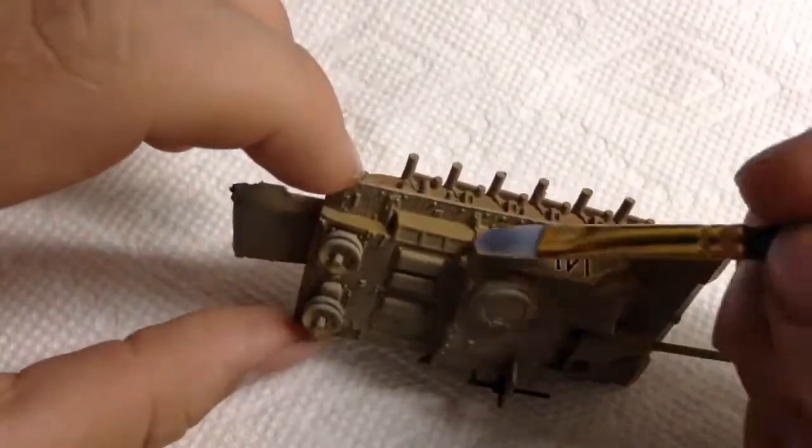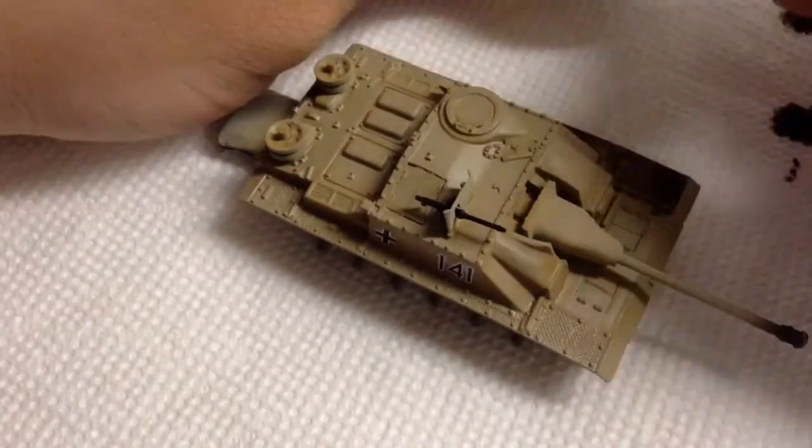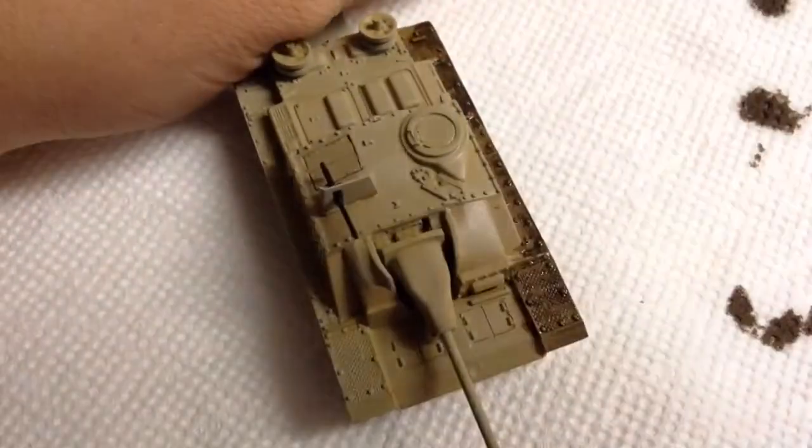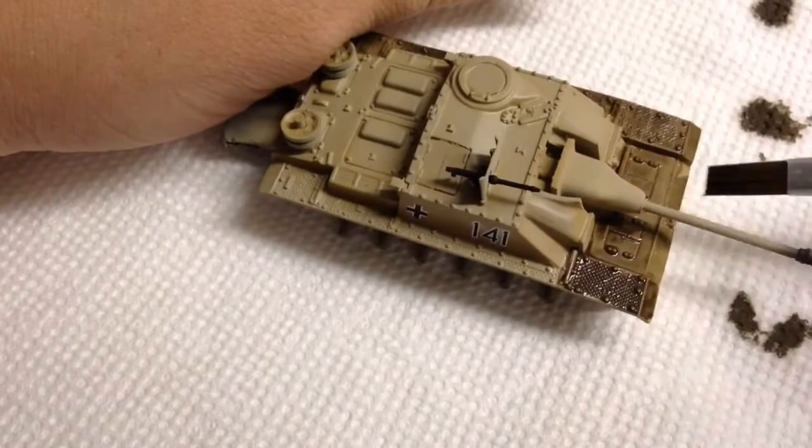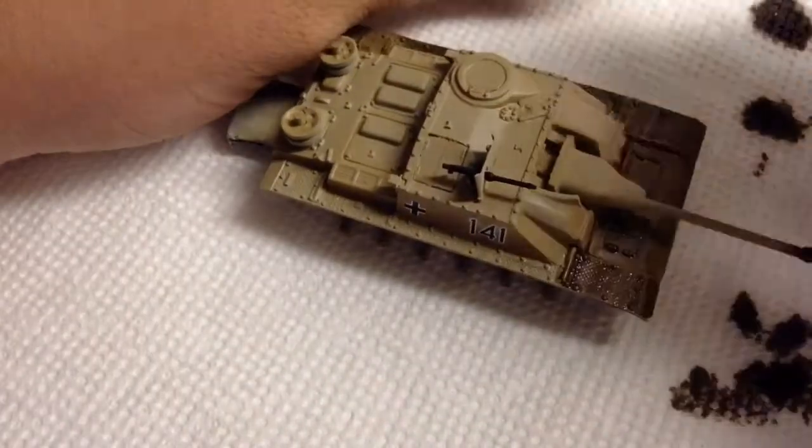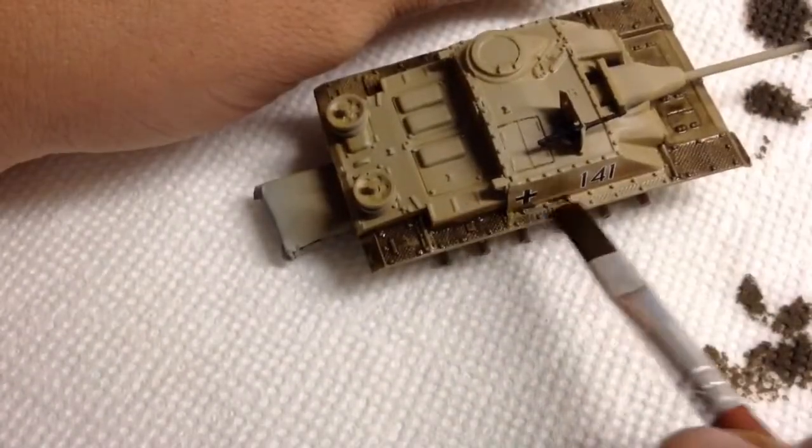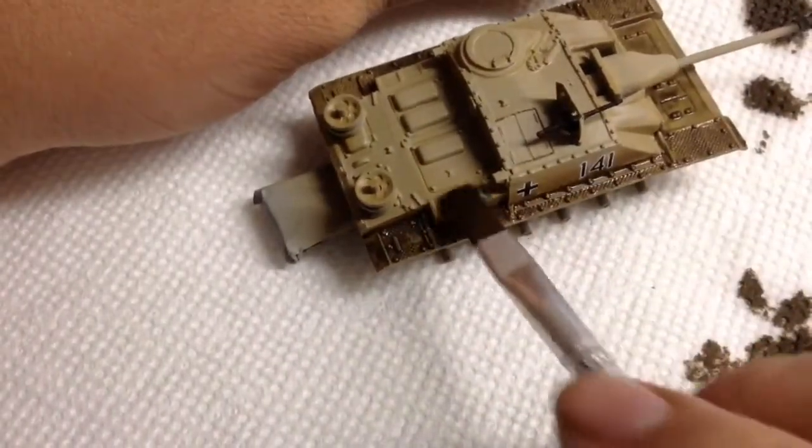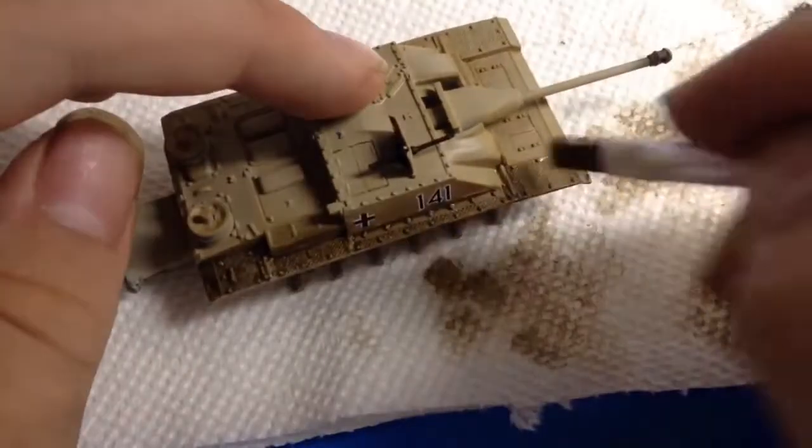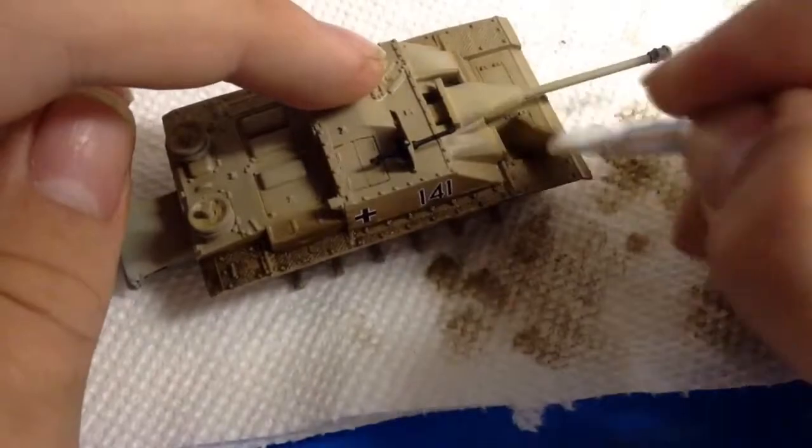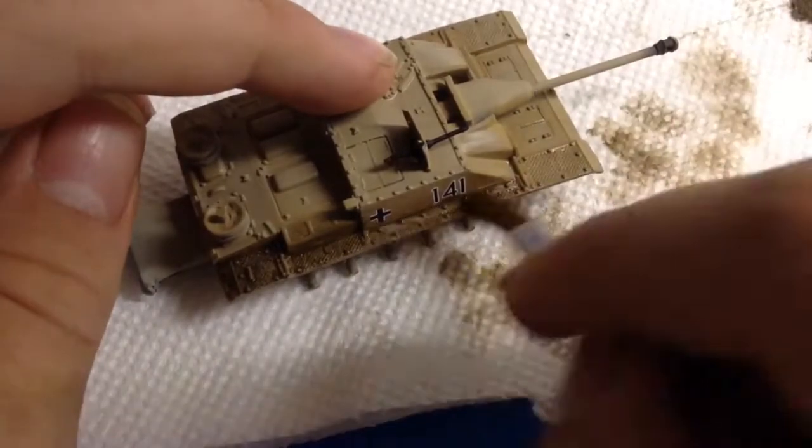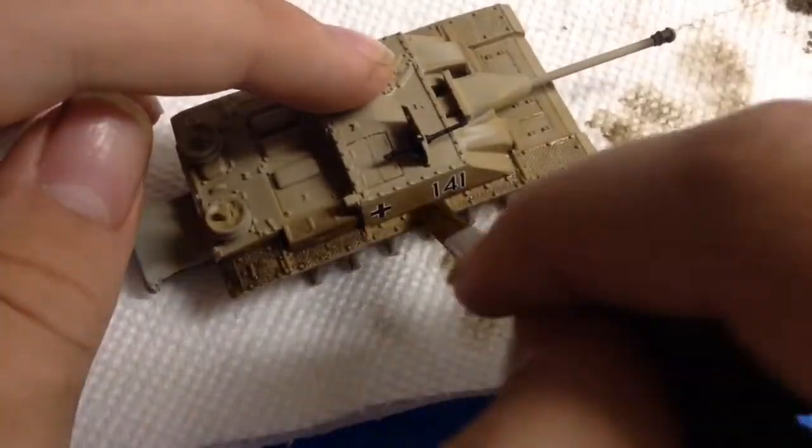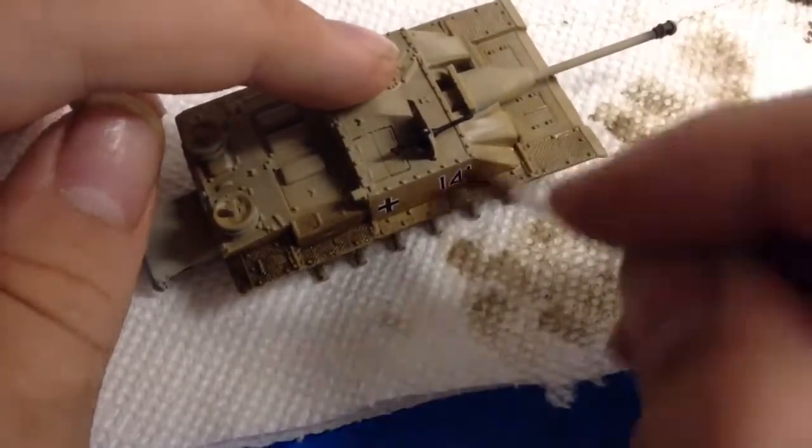I coated the decals in another layer of Future to provide protection and a glossy surface for the oil wash that I did. I haven't done much with the oil washes. I'm still experimenting and learning. I don't think I let this one sit for long enough and I may have thinned it a bit too much because it did not leave much of an effect at all on certain things like the walkways that run over the tracks. They kind of just washed straight off so it definitely grimied the tank up and helped a little bit with the overall appearance. I just don't know that I left it on long enough or thinned it, maybe I thinned it too much.